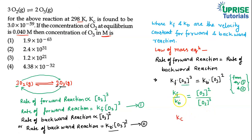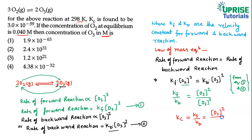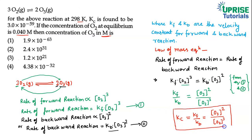Here kf / kb is written as Kc, which is the equilibrium constant. So Kc = [O₃]² / [O₂]³. This is our Equation 3, which we will use to solve the given problem.